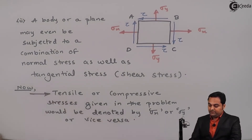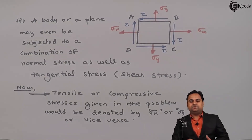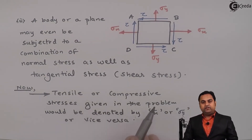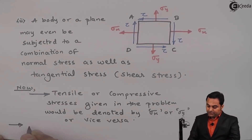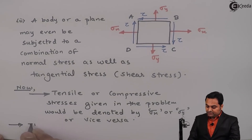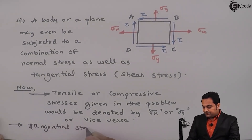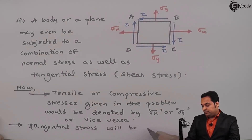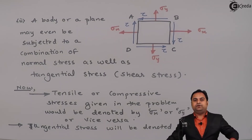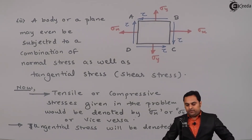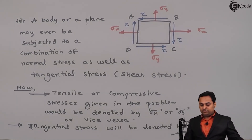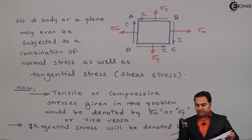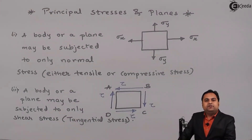Next, shear stress or tangential stress will be denoted by Sigma suffix T. Whenever I write Sigma T in this chapter it would mean tangential stress and not tensile stress, because if it is tensile or compressive we can denote it directly by Sigma X or Sigma Y. So these are some special notations used in this chapter. Here in this video we have seen the introduction of the chapter of Principal Stresses and Planes.